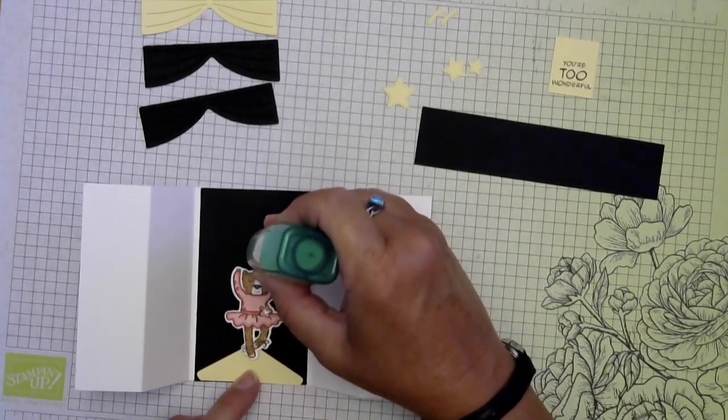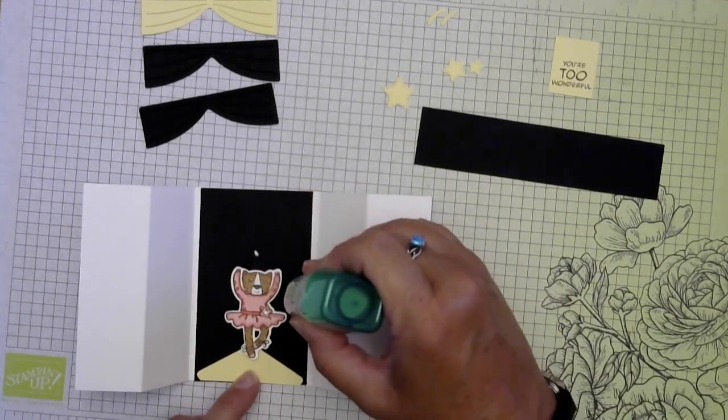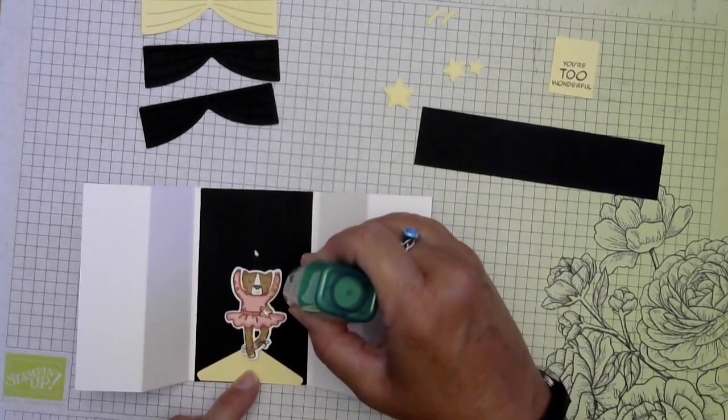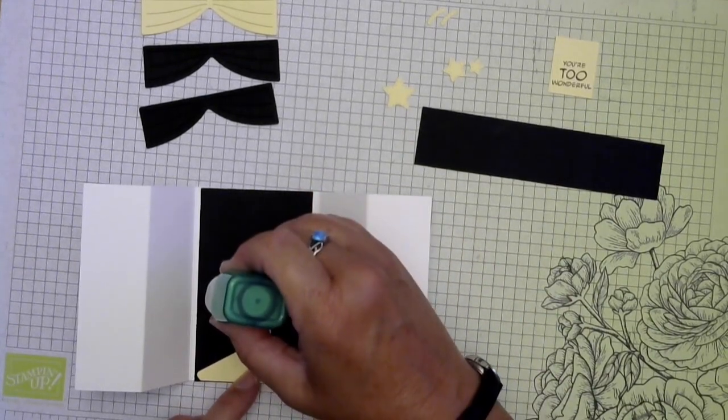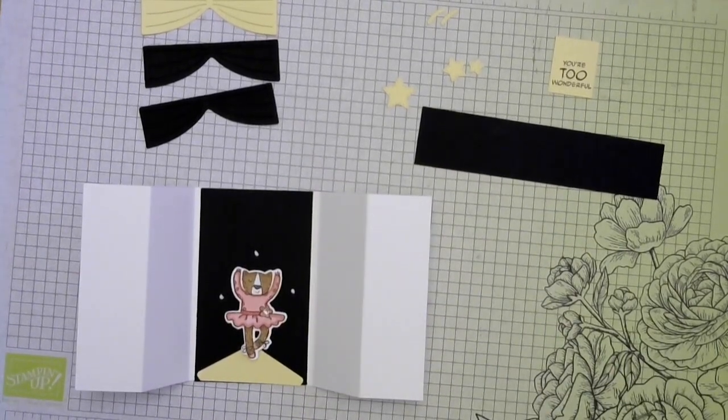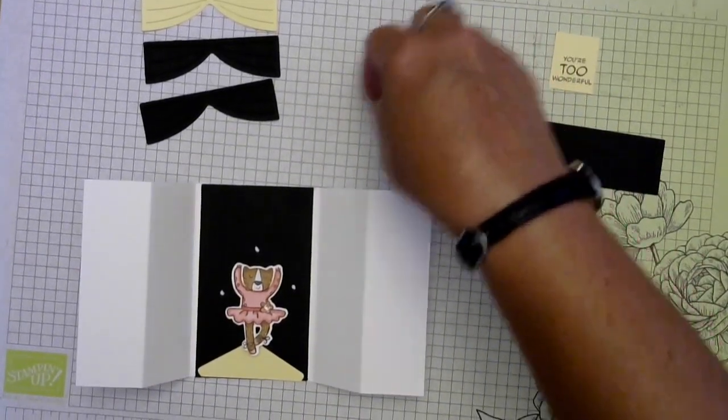And then since the stars are so small I'm just going to put some dots of glue on my back and then set the stars into them rather than trying to put glue on them.